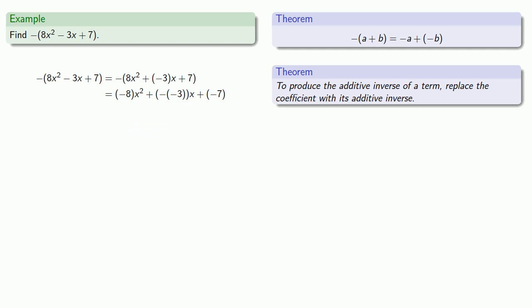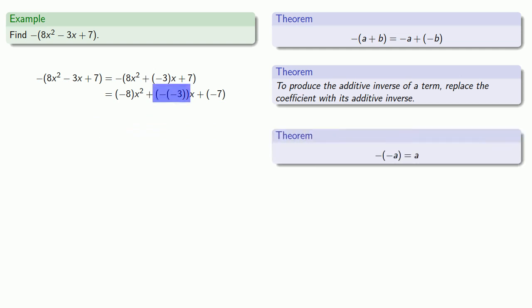We can clean this up a little bit. The additive inverse of the additive inverse of 3 is just 3 itself. So our final answer is: the additive inverse of 8 times x squared, plus 3x, plus the additive inverse of 7.